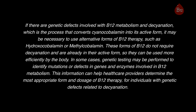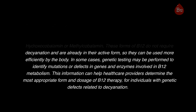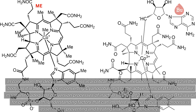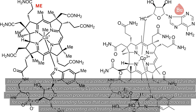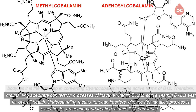These forms of B12 do not require decyanation and are already in their active form, so they can be used more efficiently by the body. In some cases, genetic testing may be performed to identify mutations or defects in genes and enzymes involved in B12 metabolism, helping healthcare providers determine the most appropriate form and dosage of B12 therapy. In conclusion, the decyanation process is a critical step in the metabolism of vitamin B12, as it is the first step in converting cyanocobalamin to the active forms of B12. Therefore, maintaining adequate conversion to active vitamin B12 is vital for overall health, and understanding factors that can interfere with decyanation is essential for preventing and treating vitamin B12 deficiency.